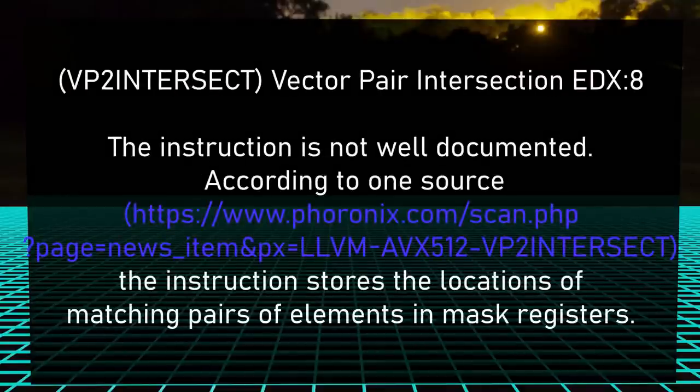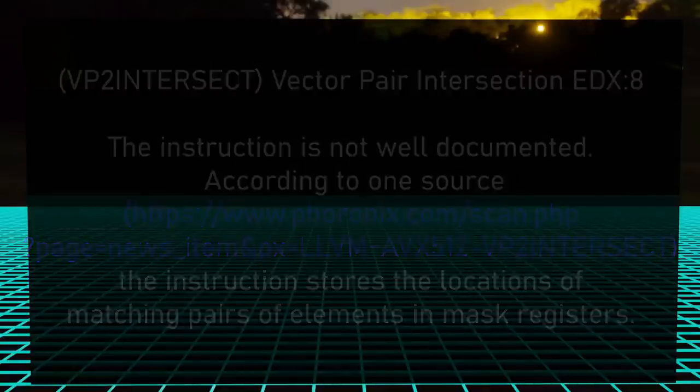Generation 5 is Tiger Lake, and we've got just one instruction set there: VP2Intersect, Vector Pair Intersection. I'm not really sure what it does, but I'll find out when we get Tiger Lake CPUs, which will be 11th gen. CPU ID flag EDX bit 8.